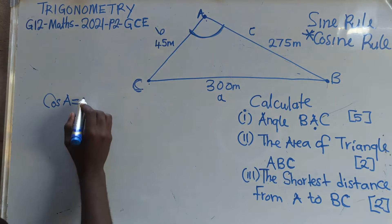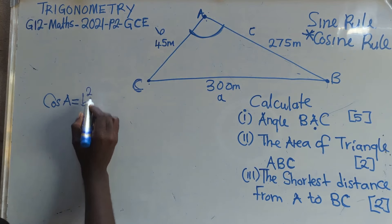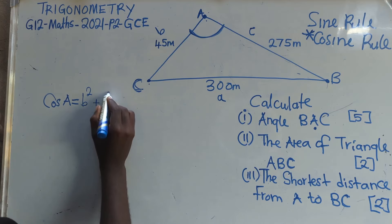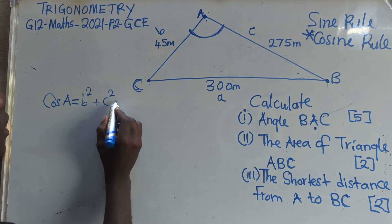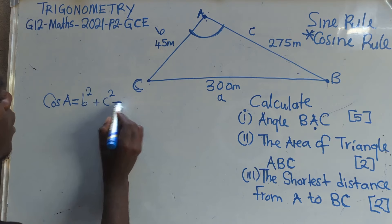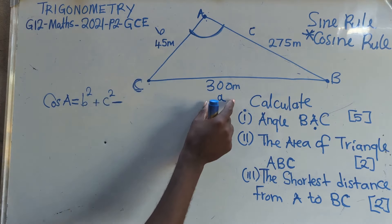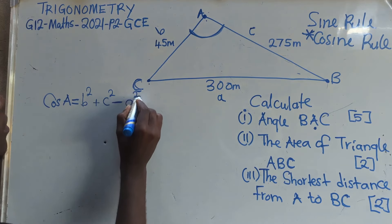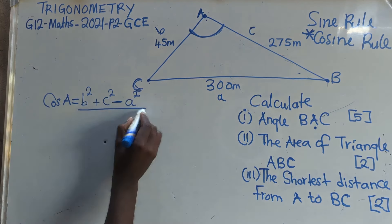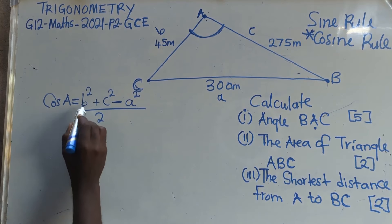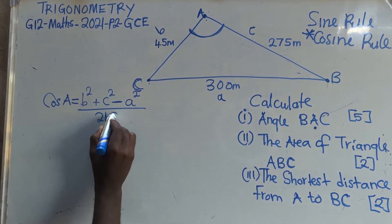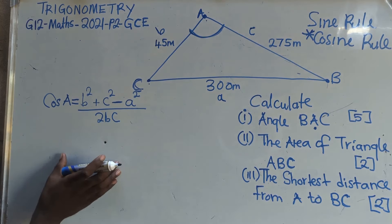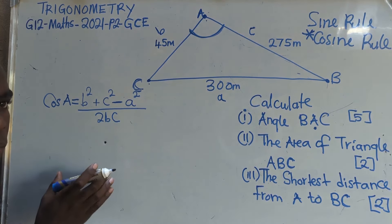So what you are going to do is add: we've got B squared, we are going to square them, plus C squared. You square that. Then you say minus — minus the side that has remained, A. So A squared like this. Then you say over. Over two. Then you multiply these two: B times C. This is what you need to do. This is what you need to understand.